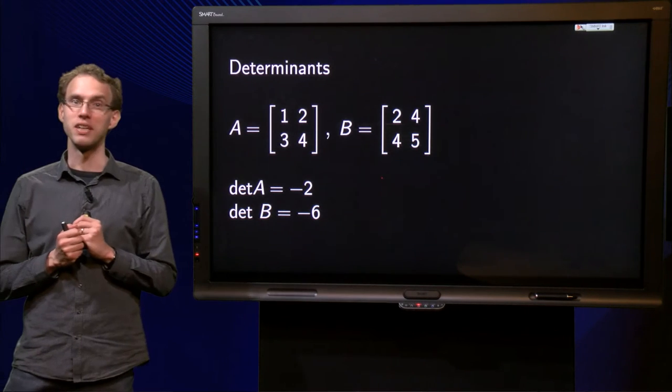Here we have a matrix A and a matrix B. A is [1, 2; 3, 4], and B is [2, 4; 4, 5]. Determinant of A, 1 times 4 minus 2 times 3 equals minus 2. Determinant of B, 2 times 5 minus 4 times 4 equals minus 6.